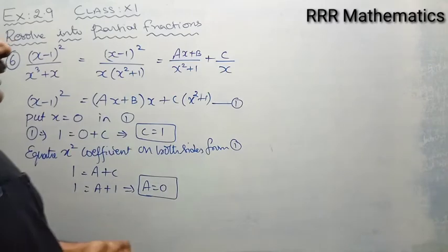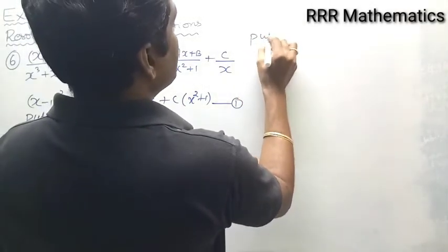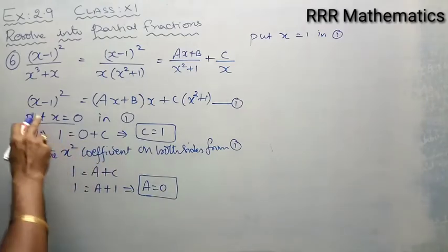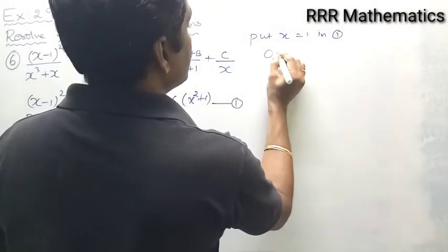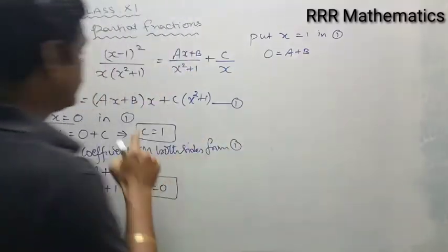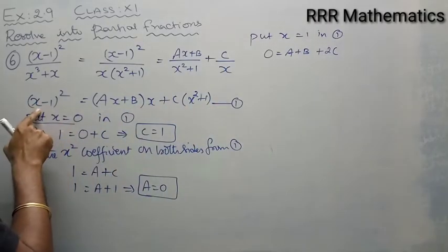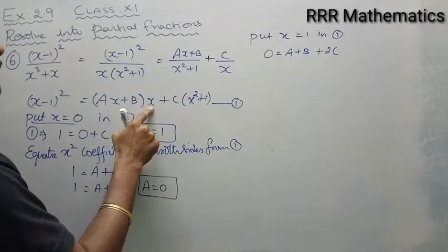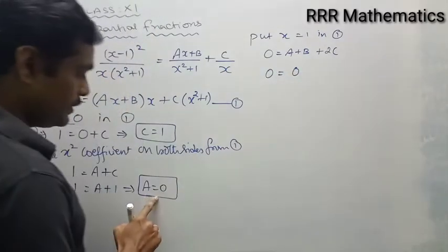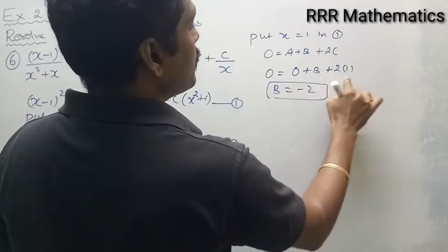Now I want to find b. I would normally put x equal to 0, but I already used that. So I will put x equal to 1 in equation 1. Left side: 1 minus 1 is 0, and 0 square is 0. Right side: a plus b into 1 is a plus b; and 1 square plus 1 is 2, times c is 2c. With a equal to 0 and c equal to 1: 0 equals b plus 2, so b equals minus 2.